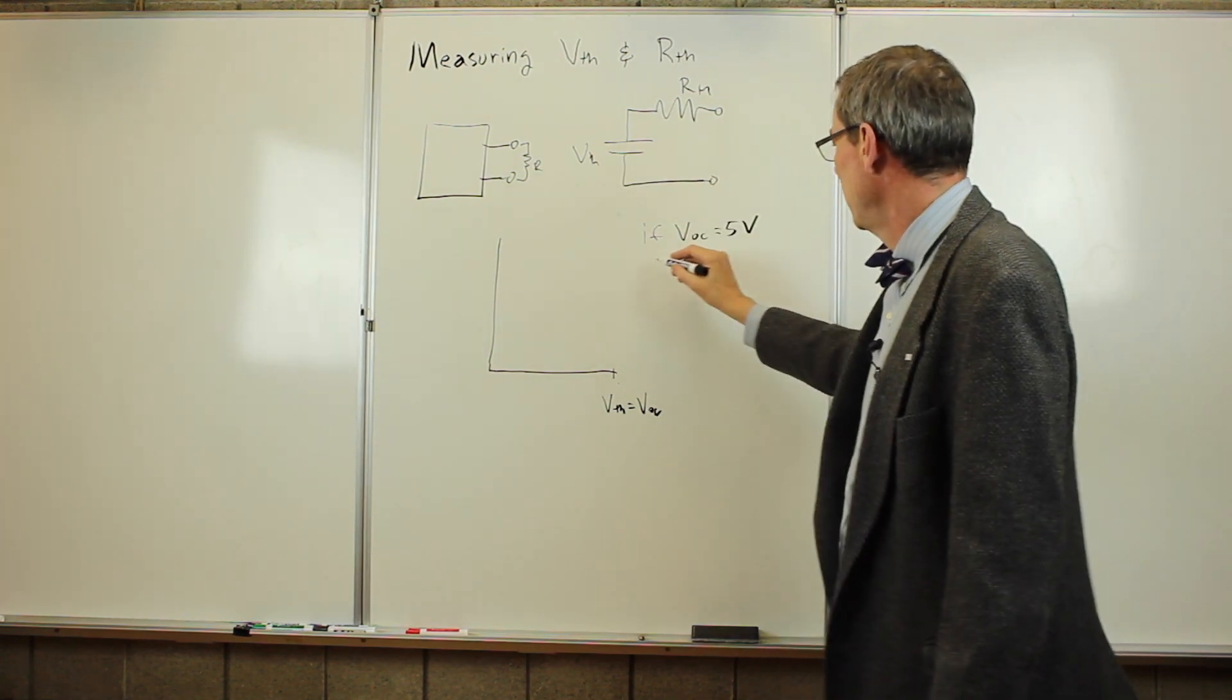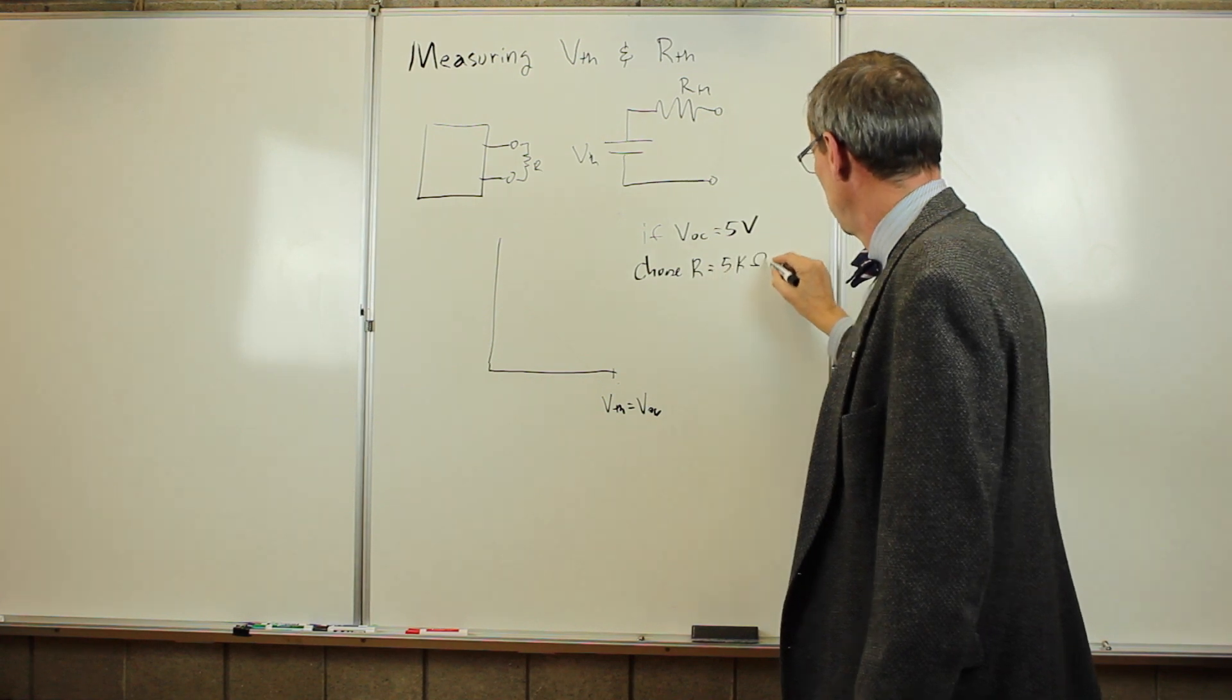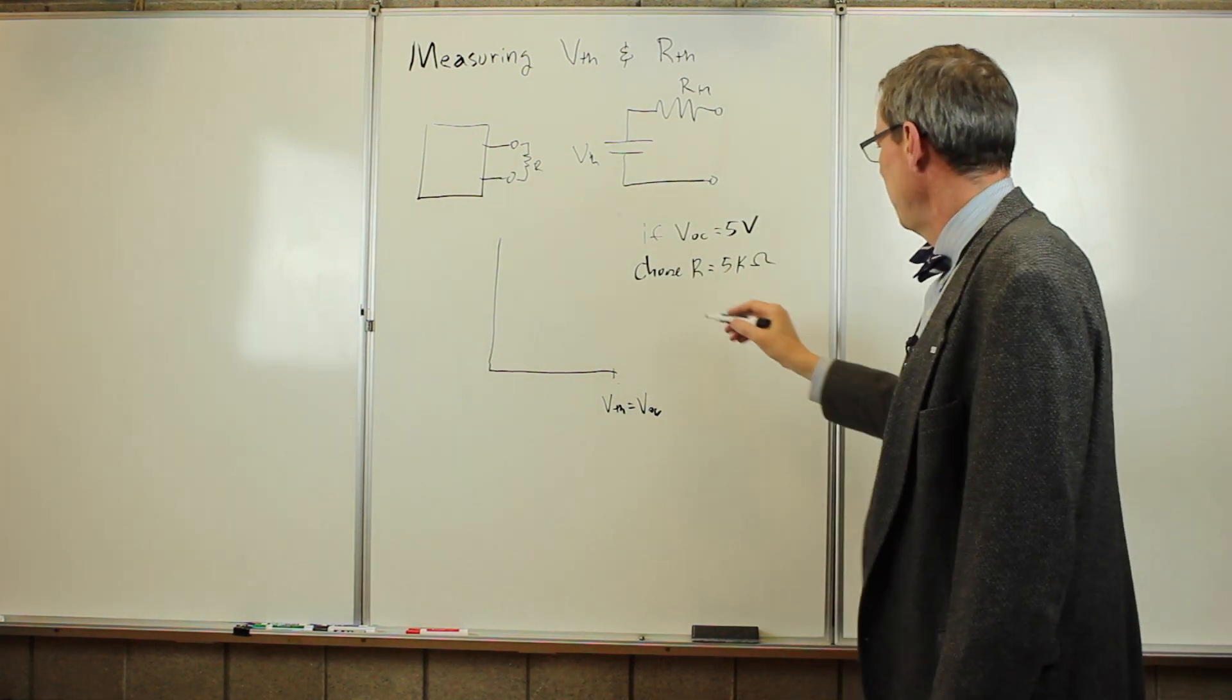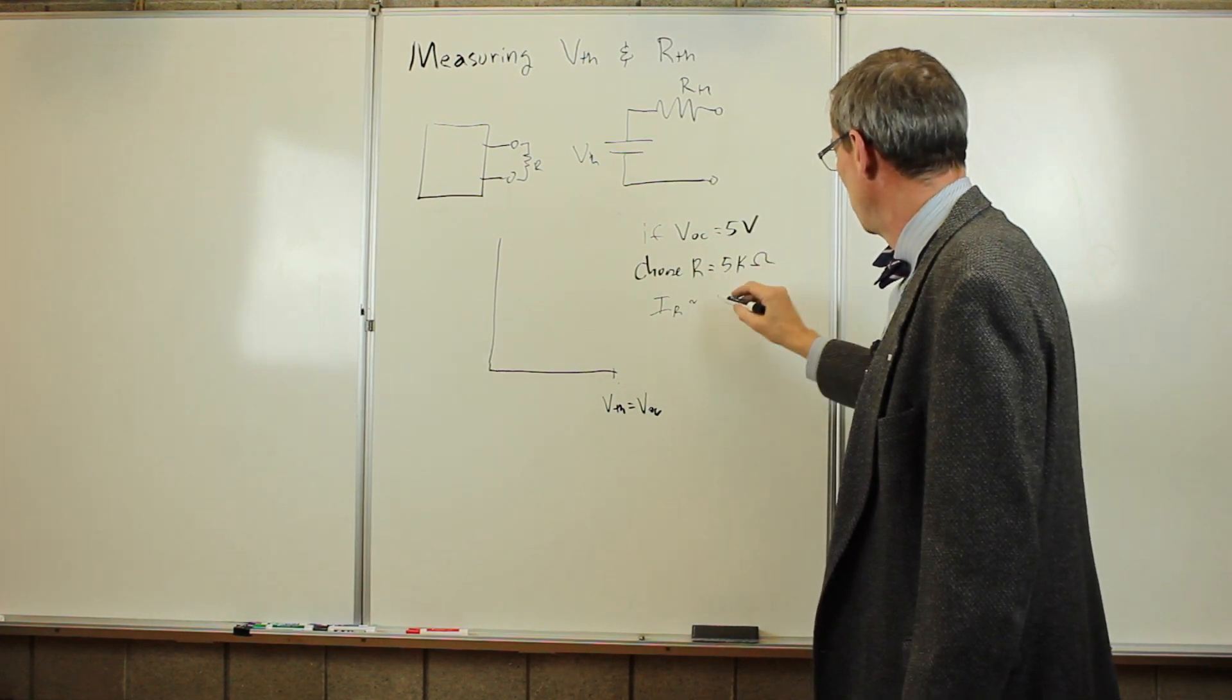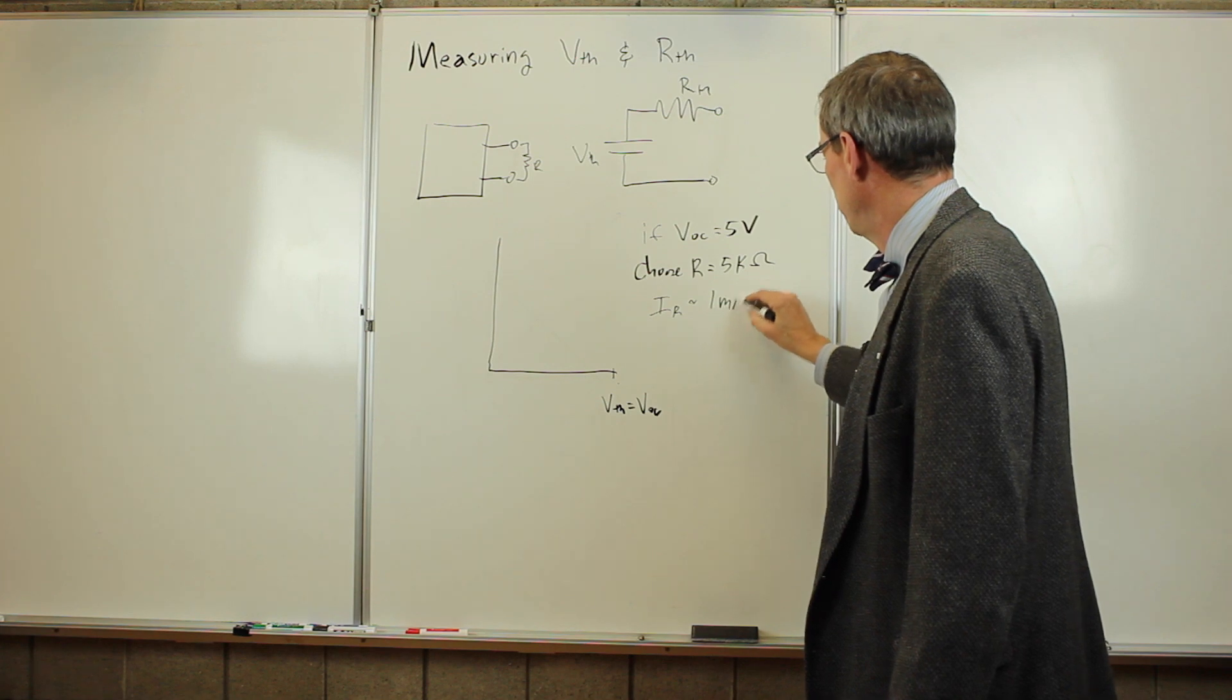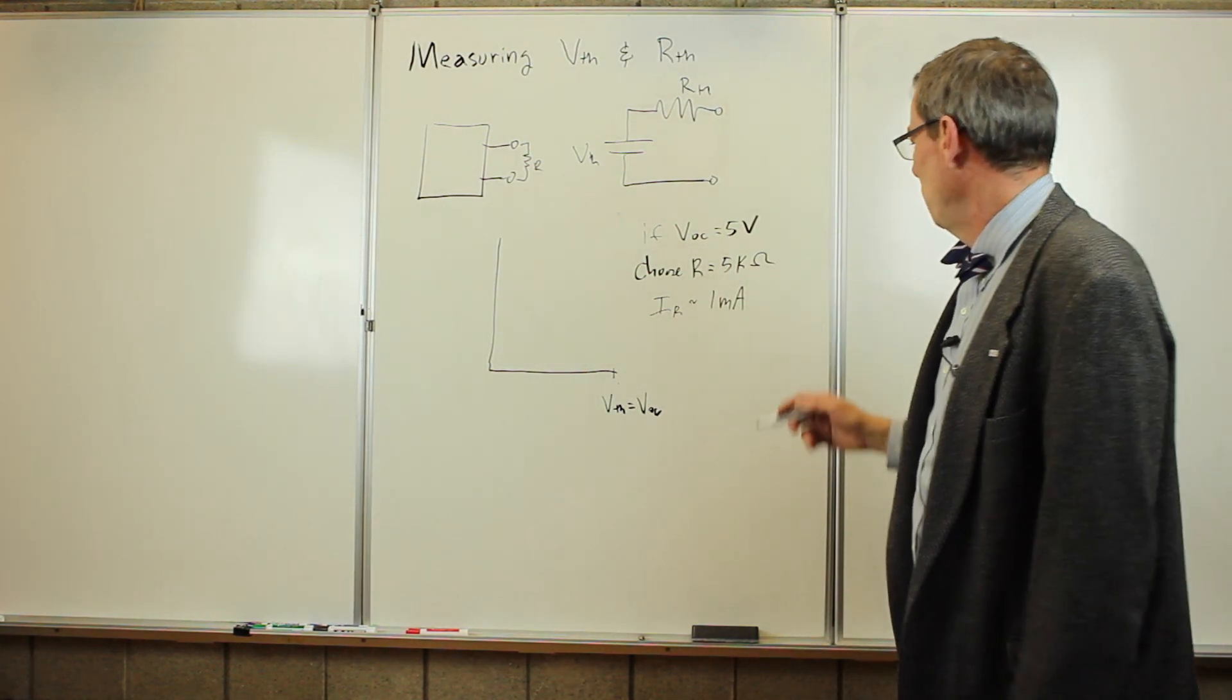if the open circuit is 5 volts, so we went in and we measured 5 volts, then we would choose R to be 5 kilo ohms. And if we did that, the current through that resistor would be something like 5 volts over 5 kilo ohms, 1 milliamp. That's generally a very safe current.